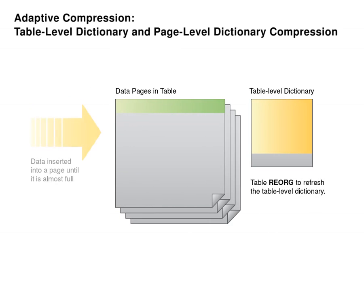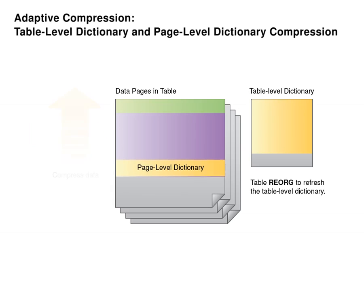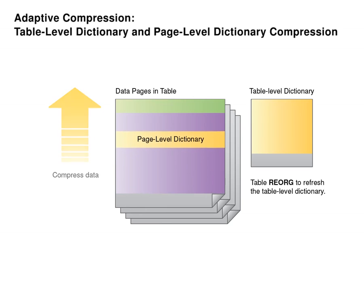The page-level compression dictionary contains local reoccurring patterns that exist within a single page. Page-level dictionaries are automatically created and maintained as data is added to a page. As the page is compressed, more data can be added to the page. Page-level dictionaries are automatically maintained, so classic table reorg is not necessary to maintain optimal compression. When page-level compression is applied, the rows are already compressed with a table-level dictionary, which results in further saving of storage space.